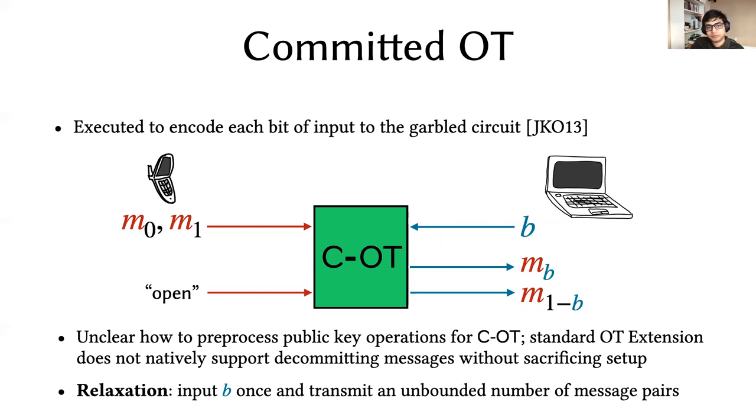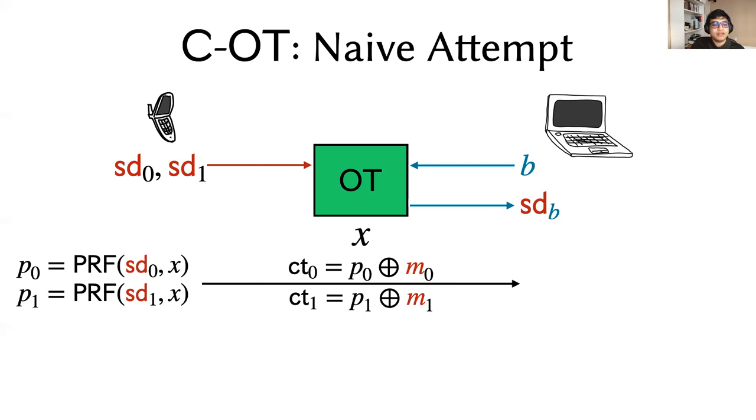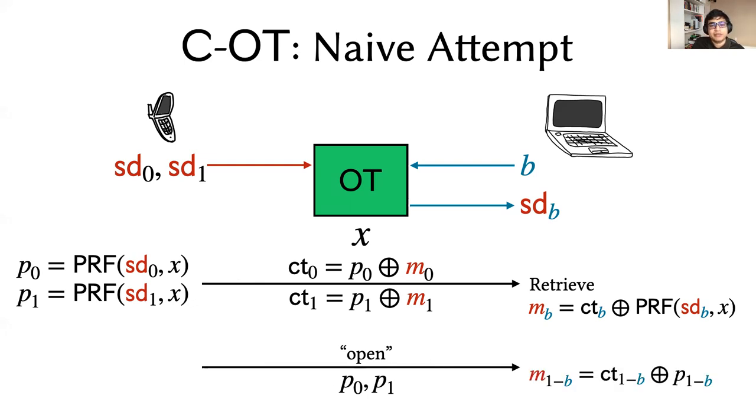Let's try a naive attempt at solving this problem. We can have the sender sample some seeds 0 and 1, which it provides to the OT, and the receiver retrieves the seed corresponding to its choice bit B. Online, given some instance X, the sender will compute one-time pads P0 and P1 by applying the PRF on its respective seeds on X, and then it's going to use P0 and P1 as pads to encrypt messages M0 and M1. Of the two of these, the receiver is able to decrypt the message corresponding to its choice bit B, as it has the seed for that message. During the open phase, the sender simply provides the pads that it had computed earlier, and the receiver is able to then decrypt the ciphertext that it wasn't able to decrypt earlier and retrieve the opposite message.